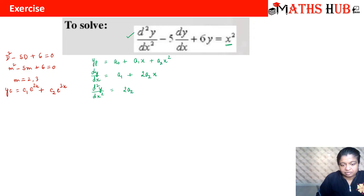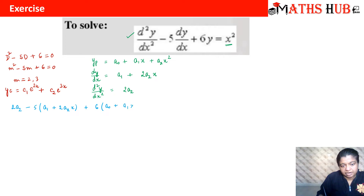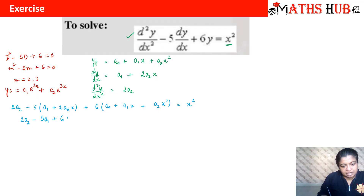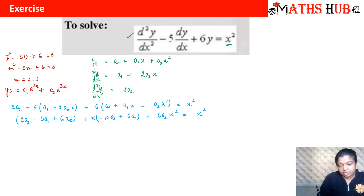Substituting into the differential equation: 2a2 − 5(a1 + 2a2x) + 6(a0 + a1x + a2x²) = x². Rearranging the terms, the constant terms give (2a2 − 5a1 + 6a0), the coefficient of x gives (−10a2 + 6a1), and the coefficient of x² gives 6a2, all equated to x².